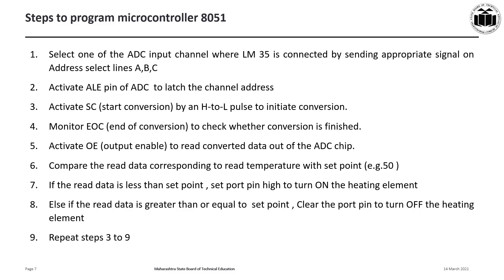The first step is to select one of the ADC input channels where LM35 is connected by sending the appropriate signal on address select lines A, B, and C. After sending the signal on address lines A, B, and C, activate the ALE pin of the ADC to latch the channel address. Next, activate the start of conversion pin by a high-to-low pulse to initiate the conversion process. Once conversion starts, monitor the end of conversion signal to check whether conversion is over. After conversion completes, activate the output enable signal to read the converted data out of the ADC chip.